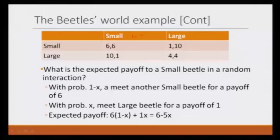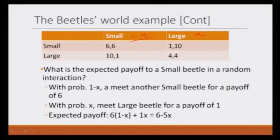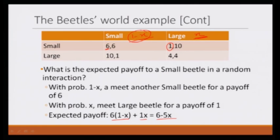With proportions 1 minus x and x, what would be the expected payoff of a small beetle? In any interaction, if a small beetle is interacting with another beetle, the probability that the other beetle is also small is 1 minus x. So that beetle would obtain 6 with probability 1 minus x, and 1 with probability x. The expected value on average: the small beetle would obtain 6 multiplied by (1 minus x) plus 1 times x, which gives 6 minus 5x.